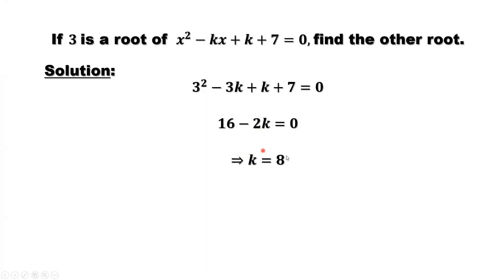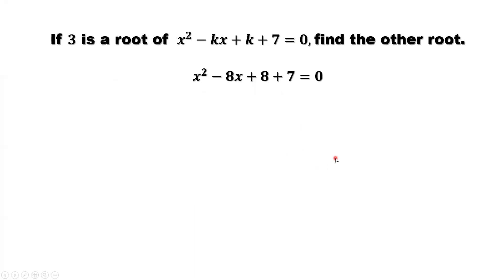Put k back into the equation. We have x² - 8x + 8 + 7, which simplifies to x² - 8x + 15 = 0. This is a quadratic equation without any parameter. We can factor the left-hand side, or you can use the quadratic formula to find the two roots.